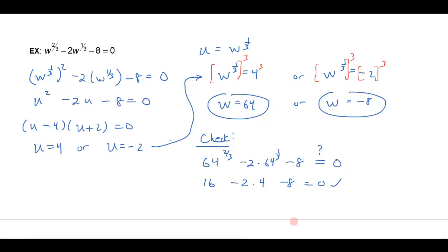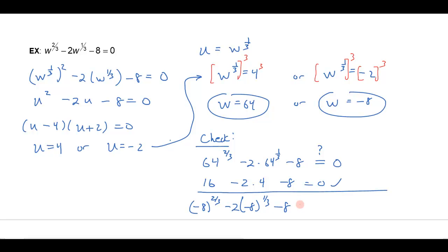We'll do the same thing with negative 8 — let's check that one as well. I get negative 8 to the two-thirds power minus 2 times negative 8 to the one-third power minus 8. Does that equal zero? The cube root of negative 8 is negative 2, and then I square negative 2, which gives a positive 4. The cube root of negative 8 is negative 2. So 4 plus 4 is 8, and 8 minus 8 equals 0. That one also checks.